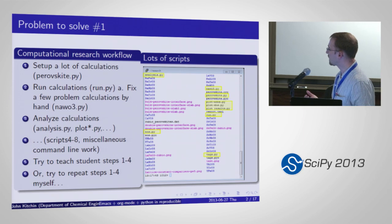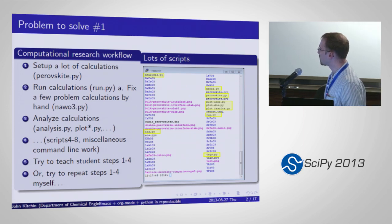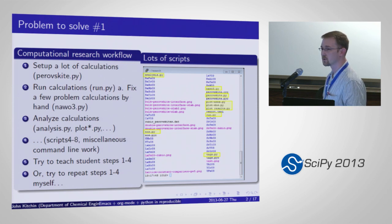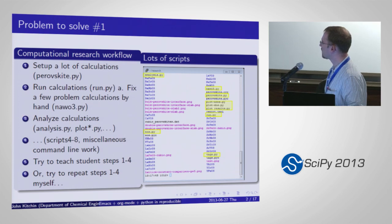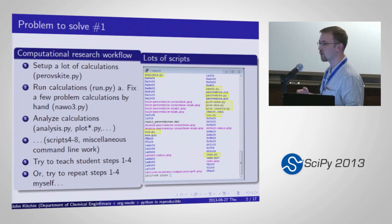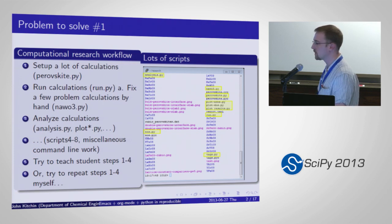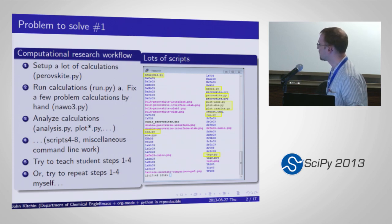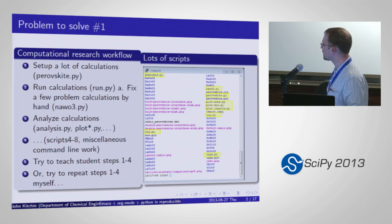One is I have a computational research workflow where I set up a lot of calculations — a lot may be hundreds or thousands — and that's typically done in a loop, maybe in a script called perovskite.py. Then I'll write a script that runs those calculations, and inevitably one of those hundreds will have some problem, and I write a second script to fix that problem. I get something like a sodium tungstate 3 script and maybe some more. Then I have analysis scripts to do various things, make various plots.